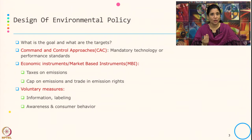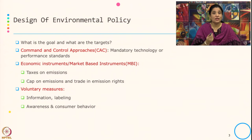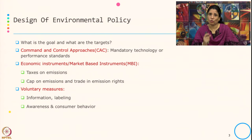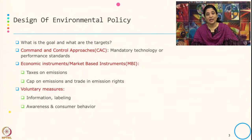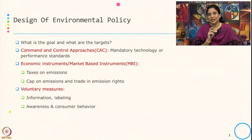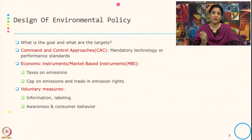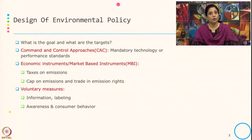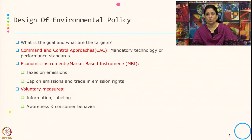If you are meeting the target and beyond that also doing emission reduction, you will get some benefit because you can trade it — there is an economic value associated with the surplus or additional effort the organization is putting in. Voluntary measures include information given on the product about environmental impact, different eco-labeling, eco-branding, creating awareness, and consumer behavior — all this comes under voluntary initiative. So there are mostly three types: command and control, economic/market-based instruments, and voluntary measures.